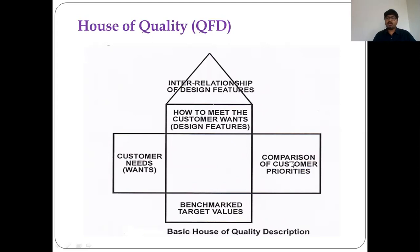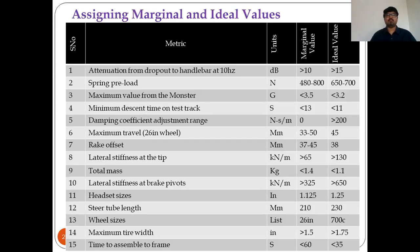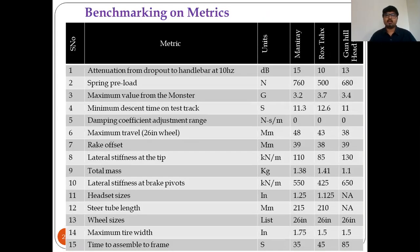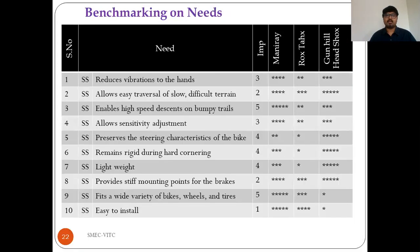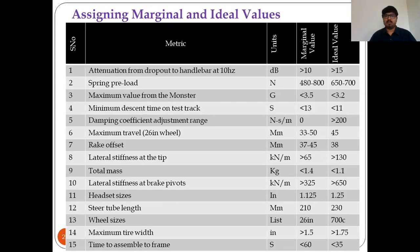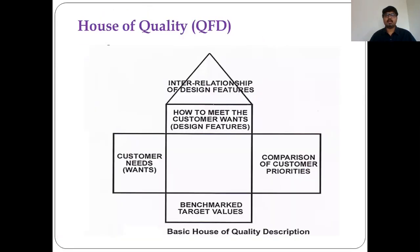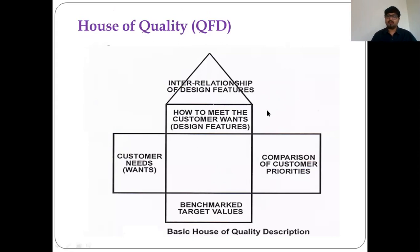In the House of Quality, benchmark target values are placed where metrics are benchmarked, and needs are compared on the other side. This consolidates what was shown across the previous two to three slides: benchmarking on metrics, benchmarking on needs, and marginal and ideal values. The interrelationship between one design feature and another can be understood from the roof, and relative importance is provided as additional information.